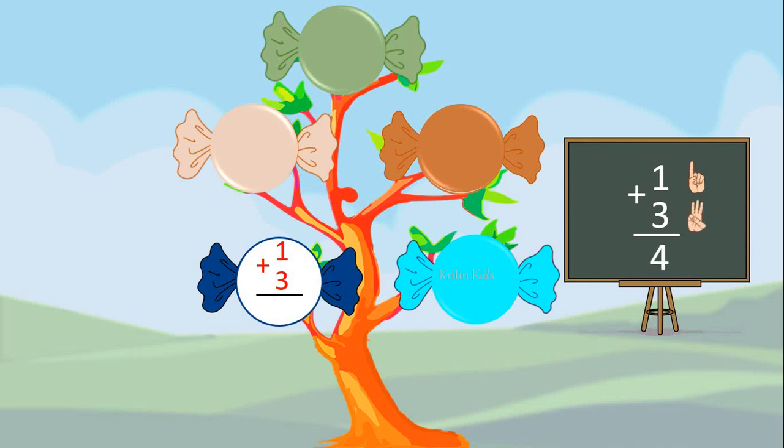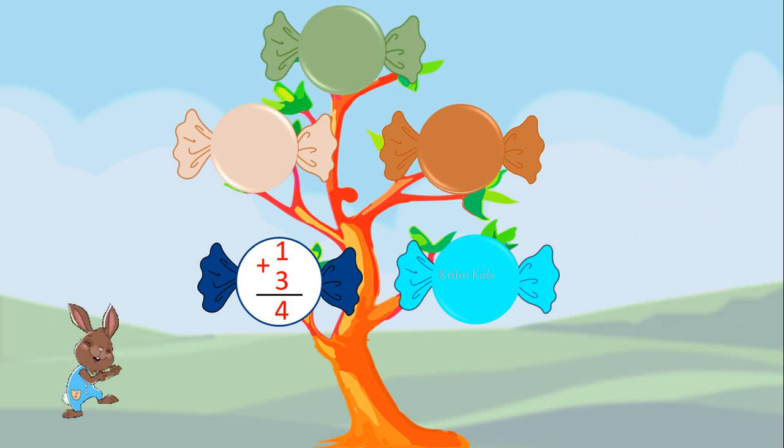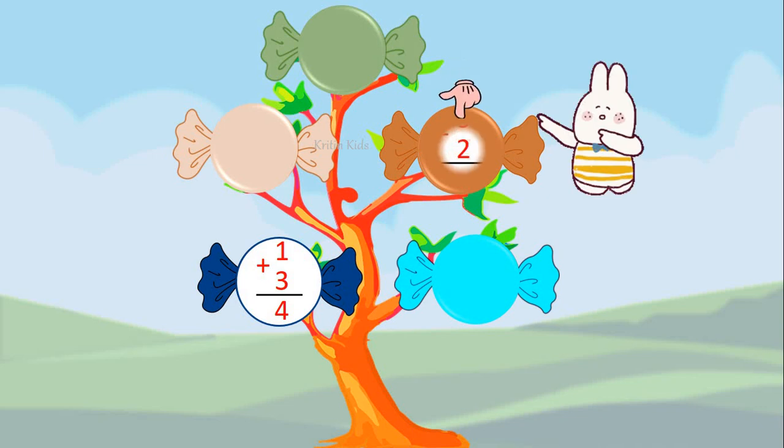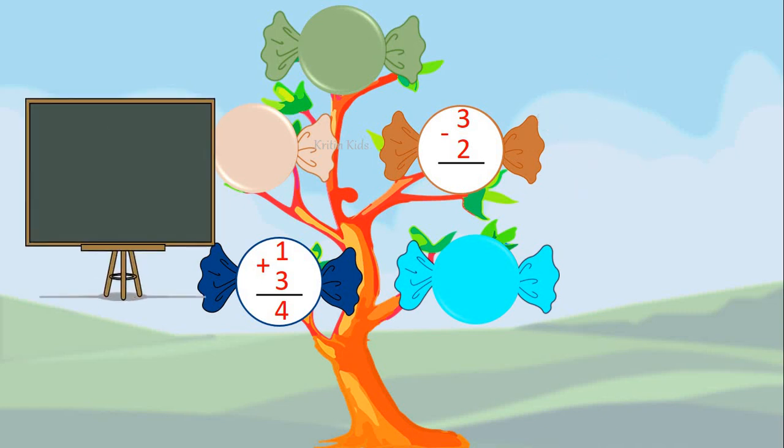I want this. Three minus two. Three minus two means open three fingers and close two fingers. So three minus two is one.